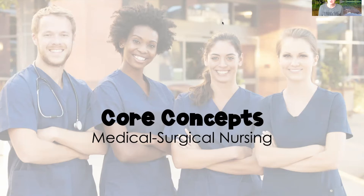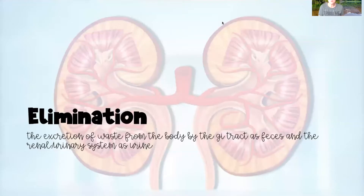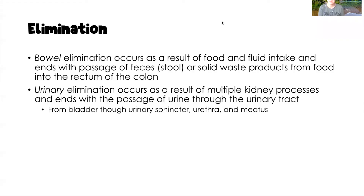Welcome if you're new here, or welcome back if you're joining us again. My name is April. Today's core concept video is going to be on elimination. Elimination is defined as the excretion of waste from the body by the GI tract as feces, and the renal or urinary system as urine. When we think about bowel elimination, this is going to occur as a result of food and fluid that we put into our body.